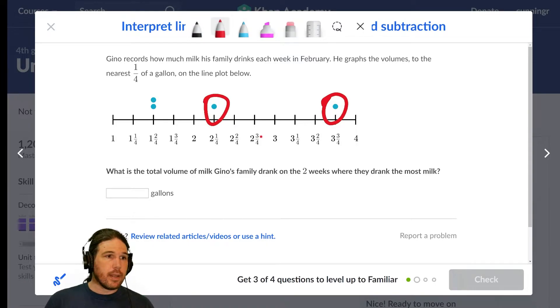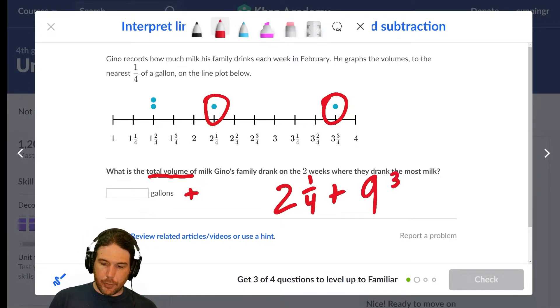And then it says it wants the total volume, which tells me that we are adding. Being able to read a problem and understand what it is they're asking for is an absolutely vital step to solving problems, because if you solve correctly a problem that they didn't ask about, it's still the wrong answer. If you thought, oh man, I'm supposed to subtract these because you're thinking maybe it's the difference between the two, then you will get the right answer to a question that they didn't ask. So we've got two and one-fourth plus, because we're looking for the total volume, nine and three-fourths.